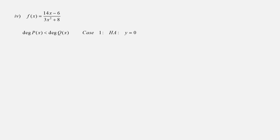One last example: f(x) equals (14x minus 6) over (3x² plus 8). The degree of the numerator is 1 while the degree of the denominator is 2. Since the numerator's degree is smaller, we are in Case 1, which means the horizontal asymptote is the x-axis itself — the line y equals 0.